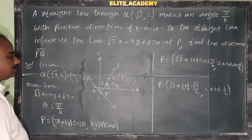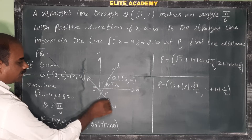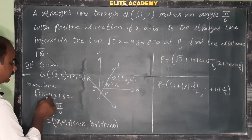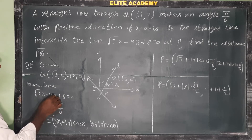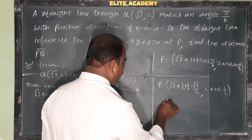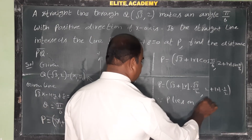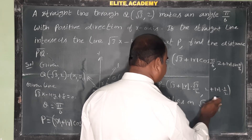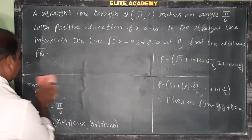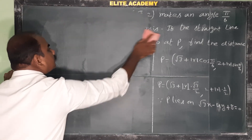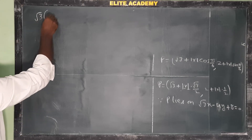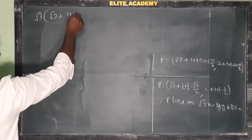Since P is the point of intersection, P lies on the line √3x - 4y + 8 = 0. Substituting the coordinates of P into this equation: √3·(√3 + |r|·(√3/2)) - 4·(2 + |r|·(1/2)) + 8 = 0. Expanding: √3·√3 + |r|·(√3·√3/2) gives 3 + |r|·(3/2).